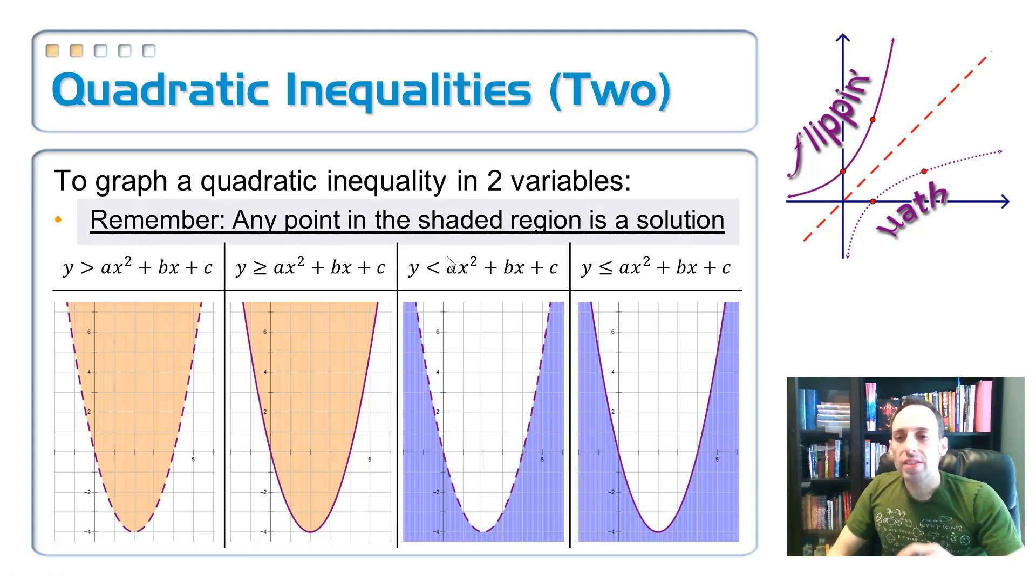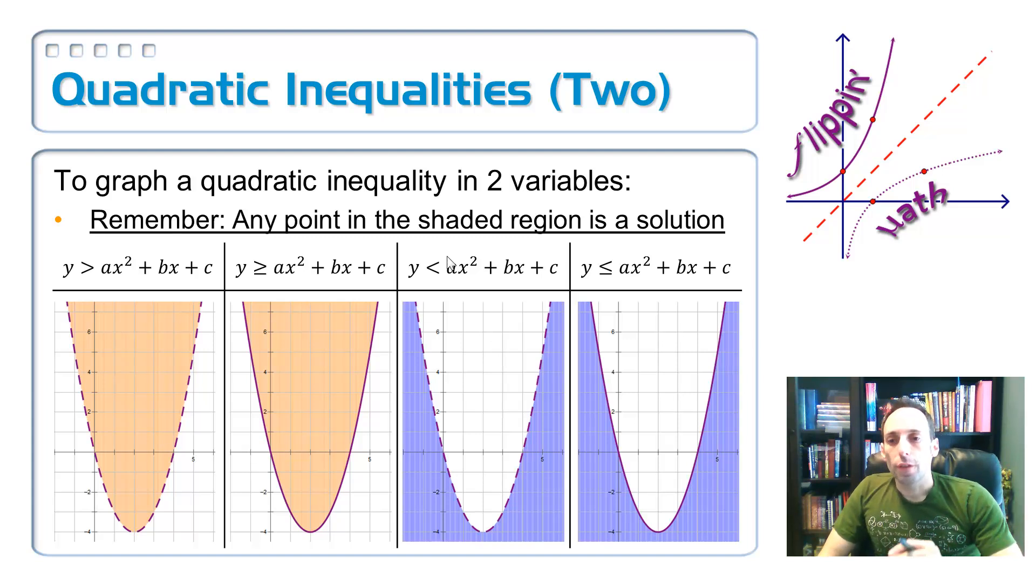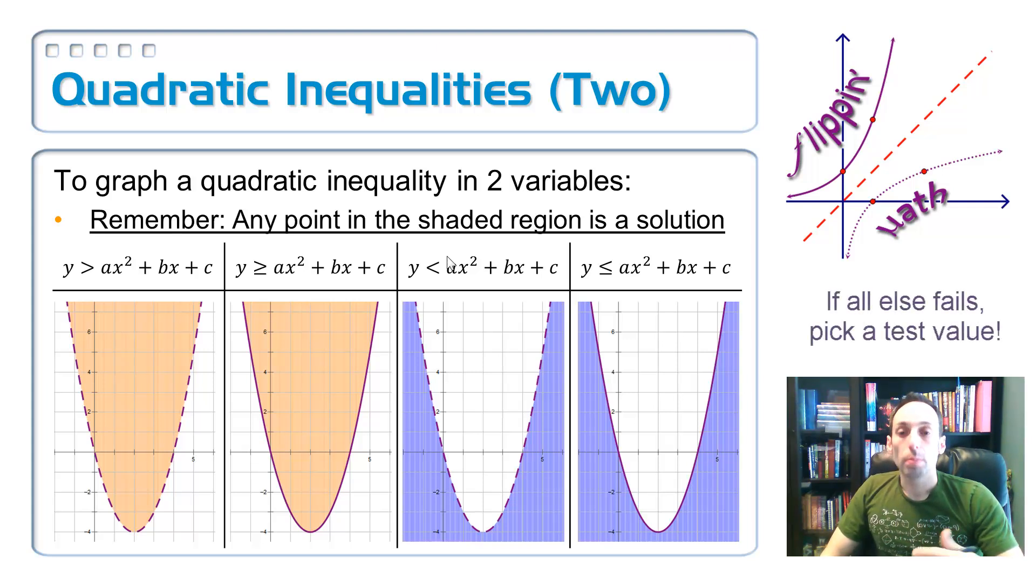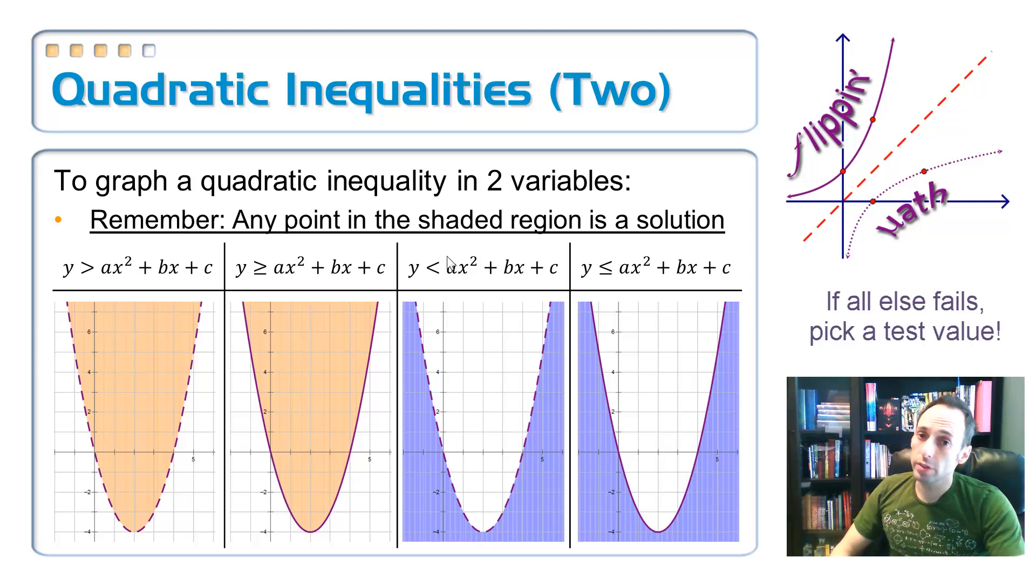Okay. So, any point that's in that shaded region is a solution. So, how many answers do you get to these quadratic inequalities? You're going to get an infinite number of answers, and your answer is just going to be whatever you color in the picture for me. So, if it's a little confusing as to what part you should shade, you can always pick a test value. Plug it in, see if it works. If it works, shade that region. If it doesn't, shade the region that doesn't contain that point.